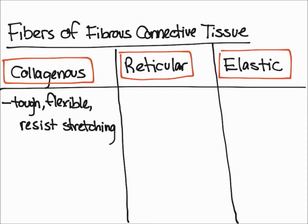Collagenous fibers are tough, they're flexible, and they resist stretching. You can find collagen in tendons, in ligaments, and even in the deep layer of the skin. Those regions are mostly collagen.